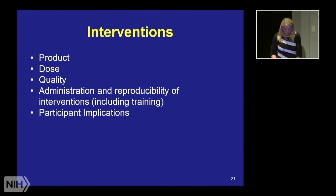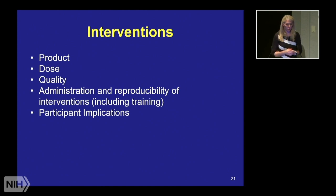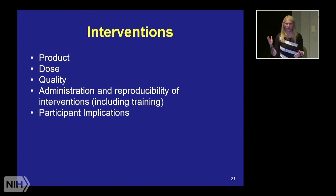For interventions, you want to give enough information that someone else could repeat and deliver this intervention. At NCCIH we often use natural products. For example, a study looking at fish oil — one of the top-selling natural products in the U.S. — must account for the fact that virtually every over-the-counter formulation differs from the next. They have differing amounts of the two primary fatty acids, EPA and DHA, and may contain other oils as well.